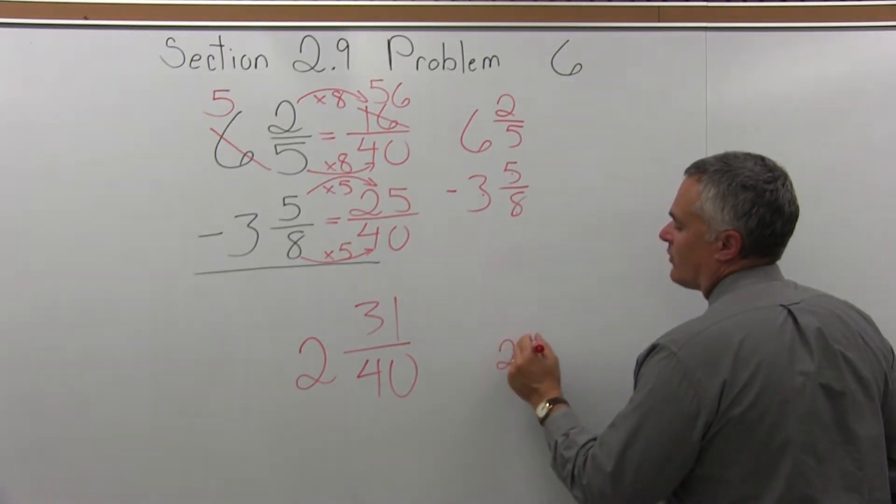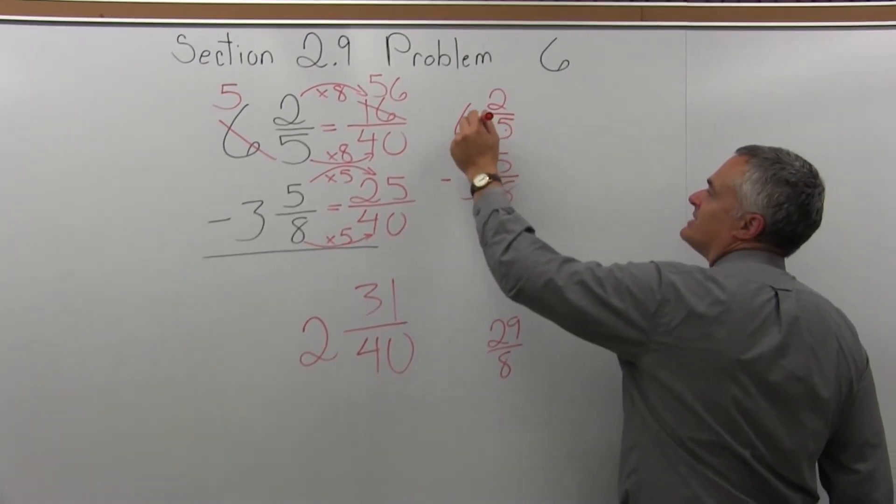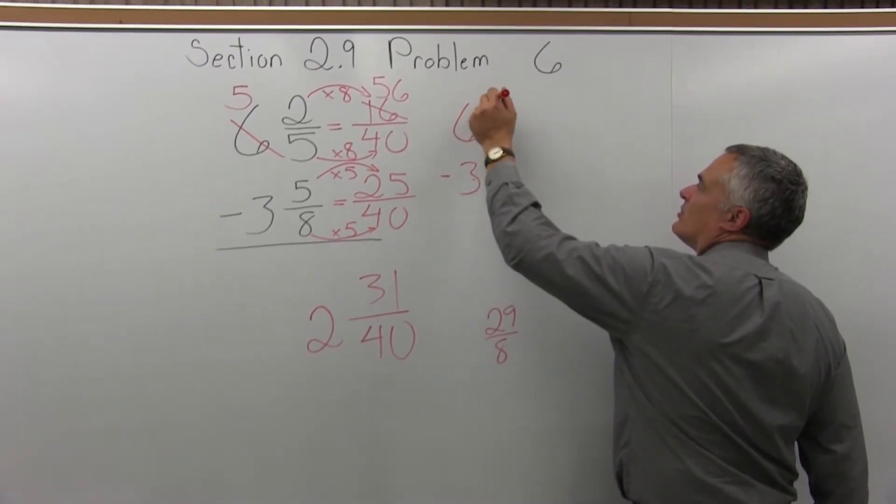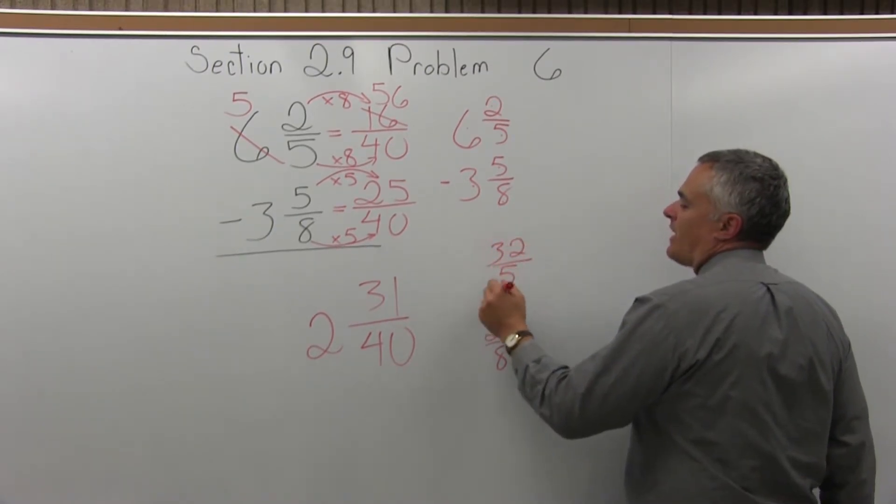The upper fraction, 5 times 6 is 30, 30 plus 2 more is 32. So I have 32 over 5.